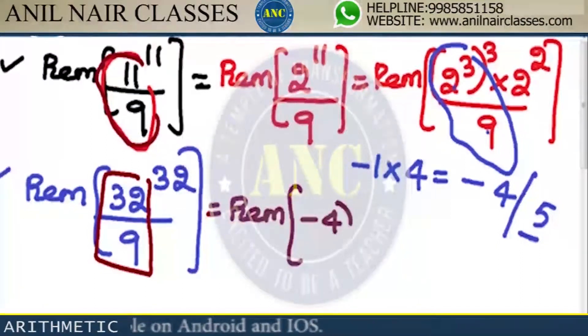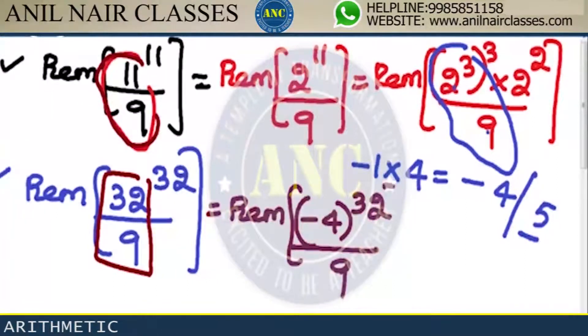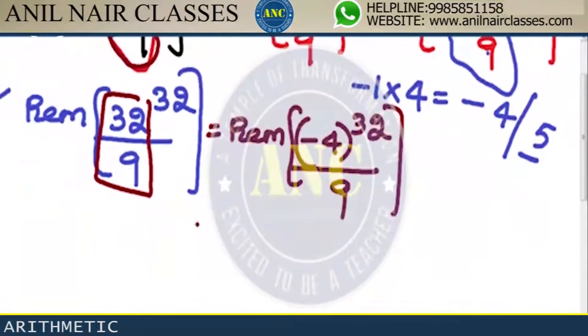Minus 4 power 32 divided by 9. Can I take negative remainder? You can take minus. Power even is plus, so it is 4 power 32 divided by 9.